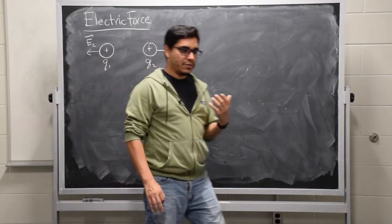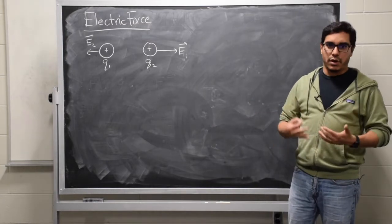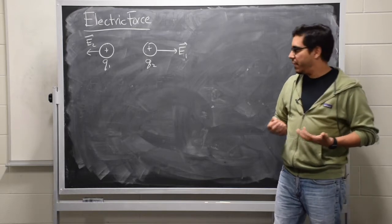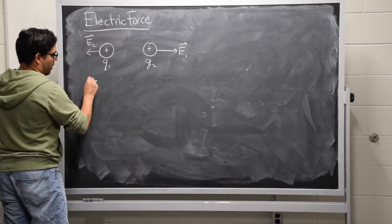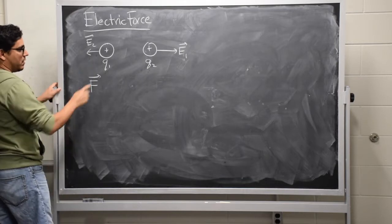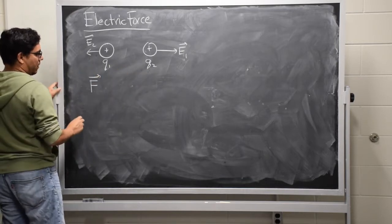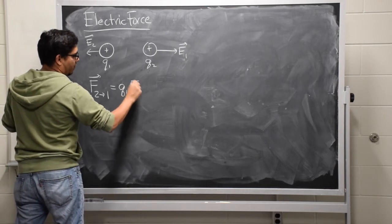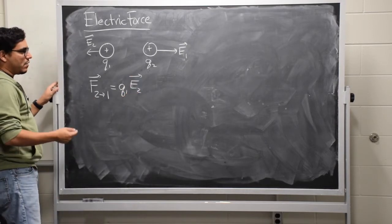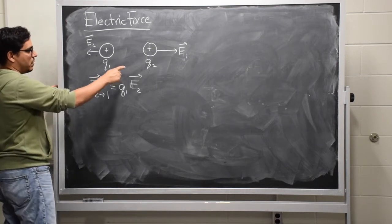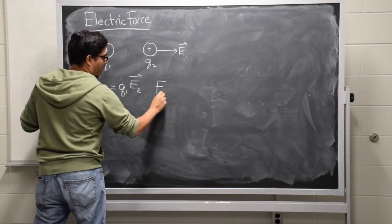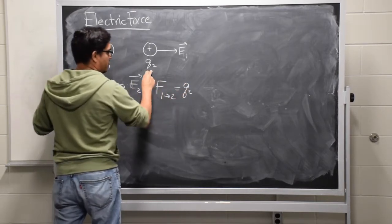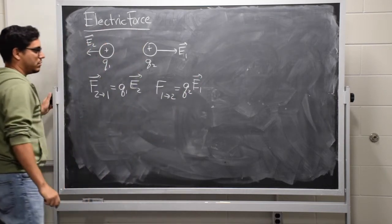When we look at how these charges interact and the pushes and pulls associated with it, it turns out that the product of the charge and the electric field external to that charge gives you the force acting on that charge. So if I want to know the force by charge 2 on charge 1 — that is, the push that charge 2 applies to charge 1 — that is charge 1 times the electric field produced by charge 2. On the other hand, if we want the force that charge 2 experiences due to charge 1, that is charge 2 times the electric field at the location of charge 2, which is E1.